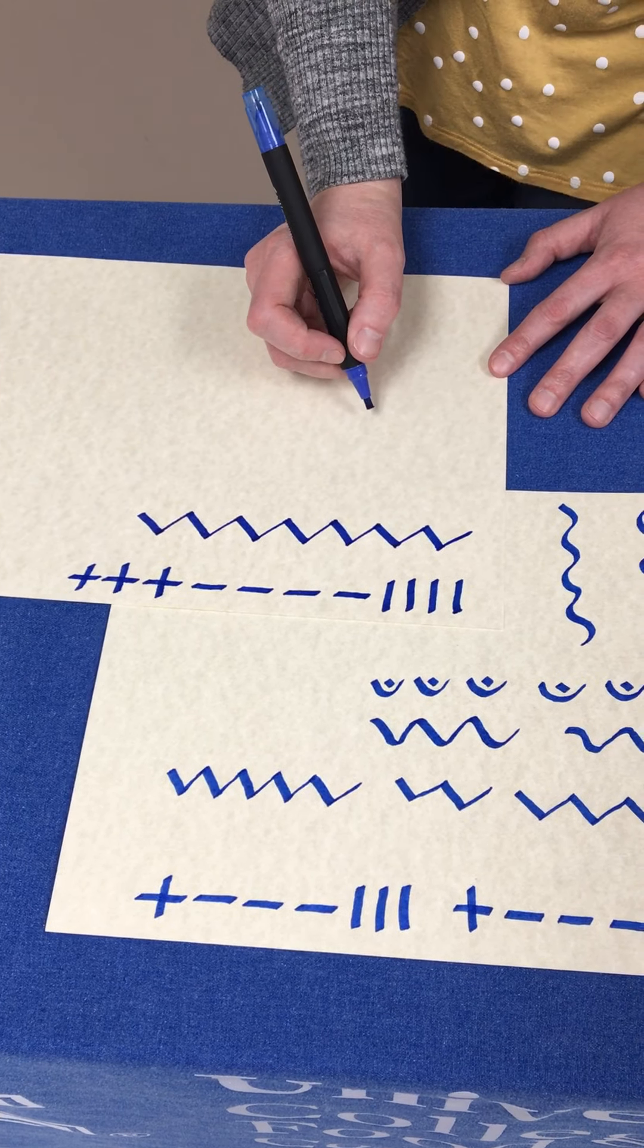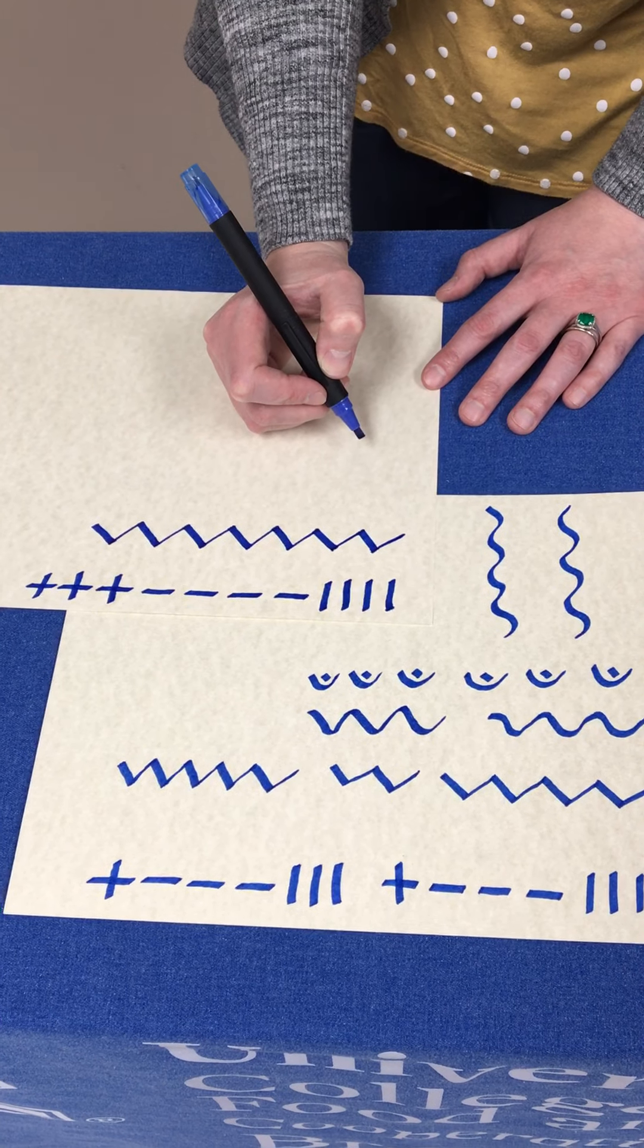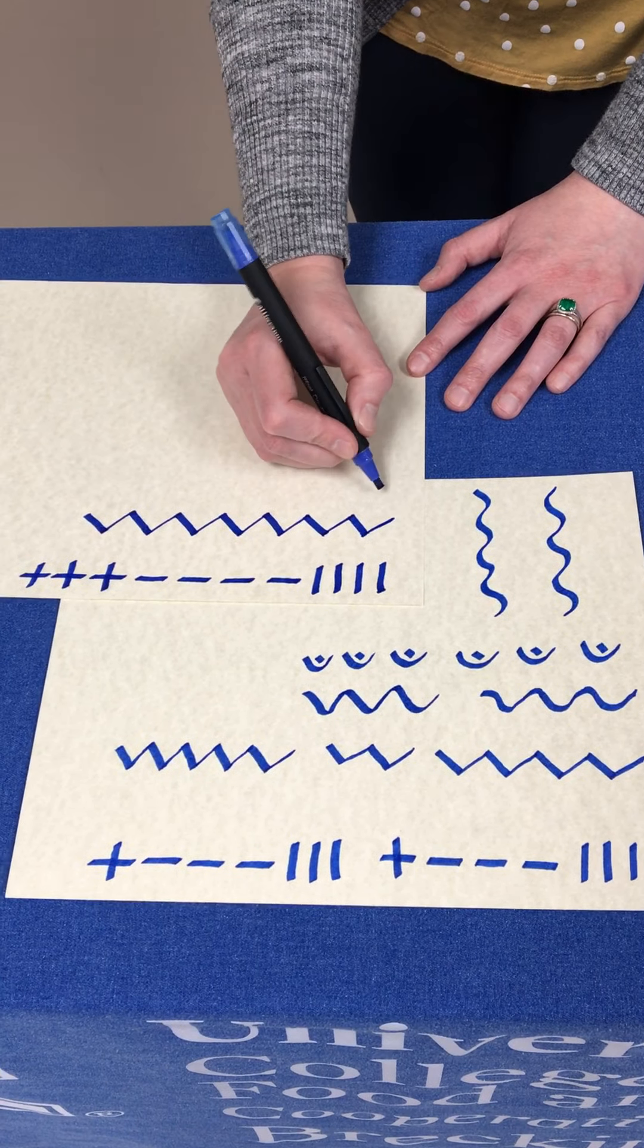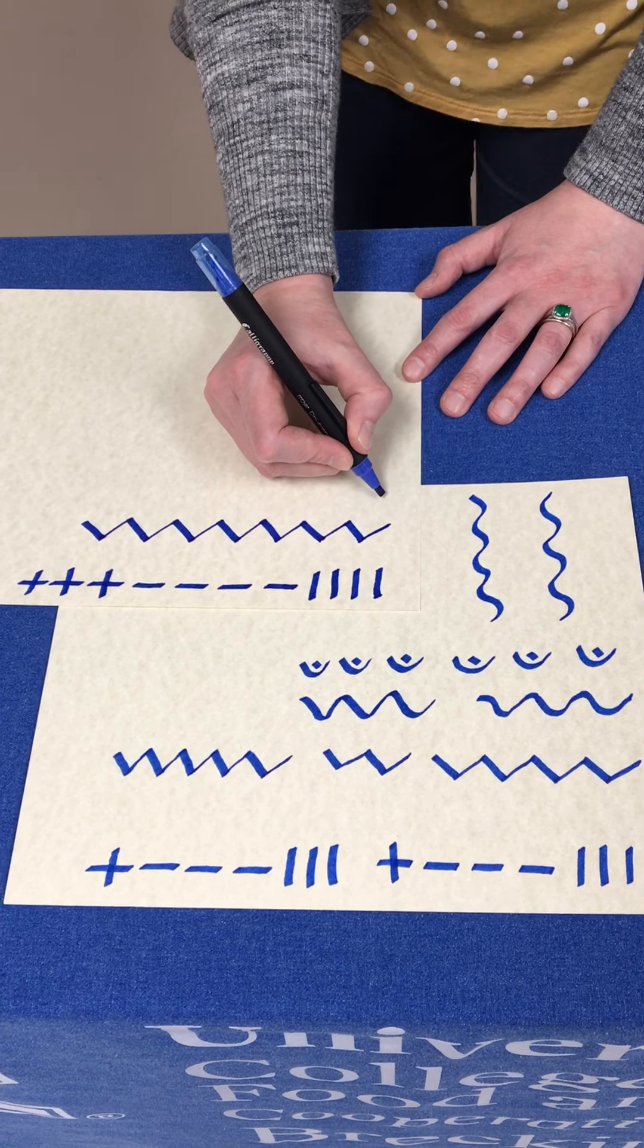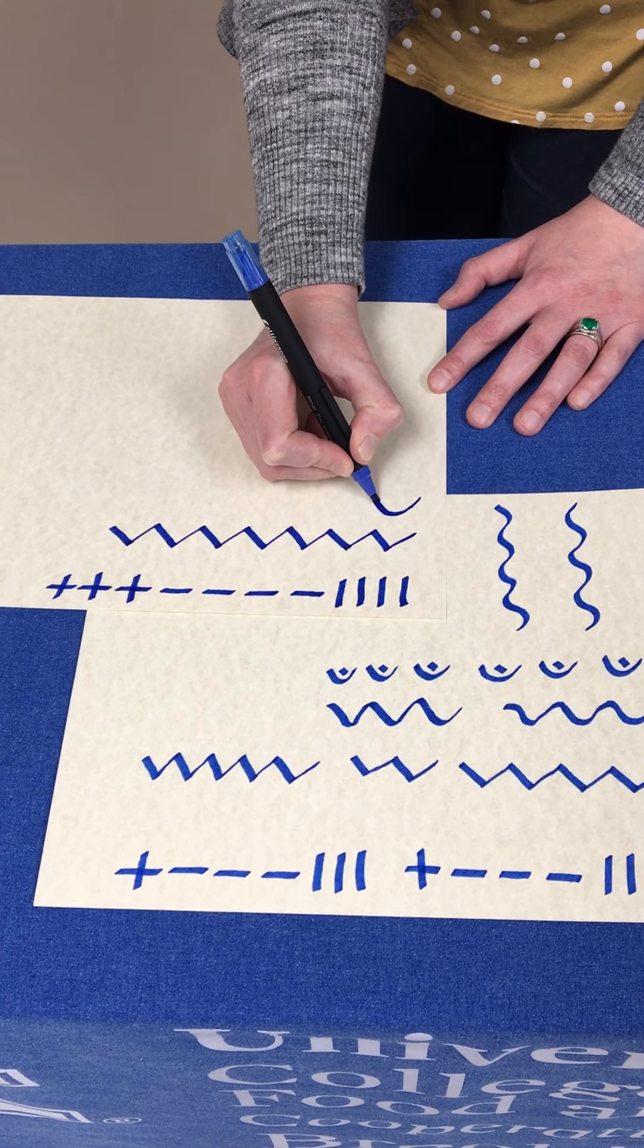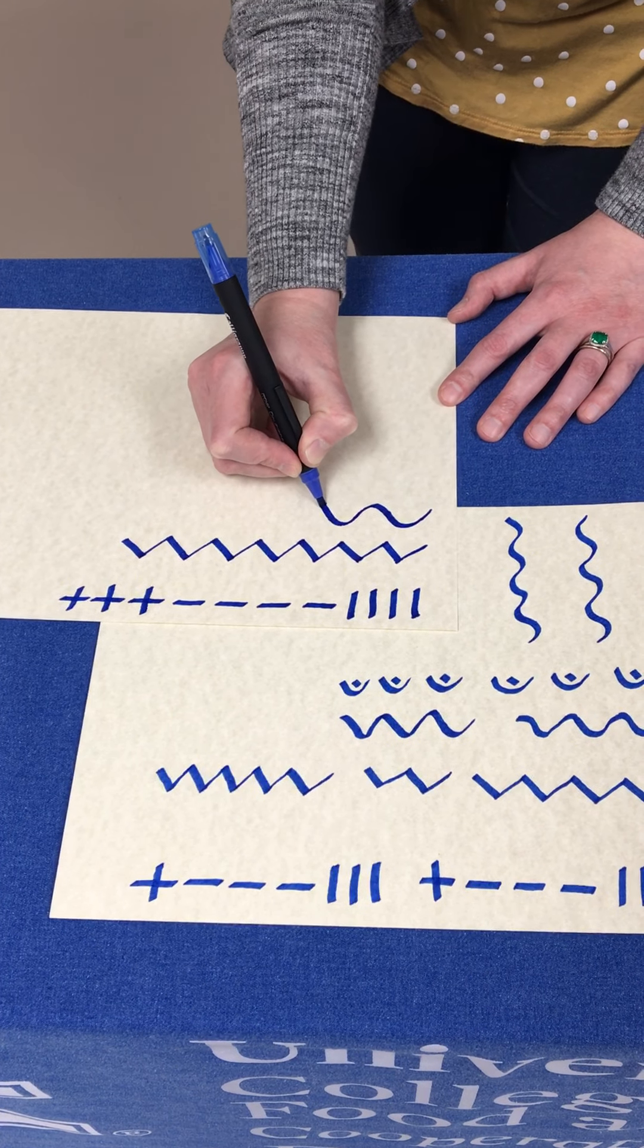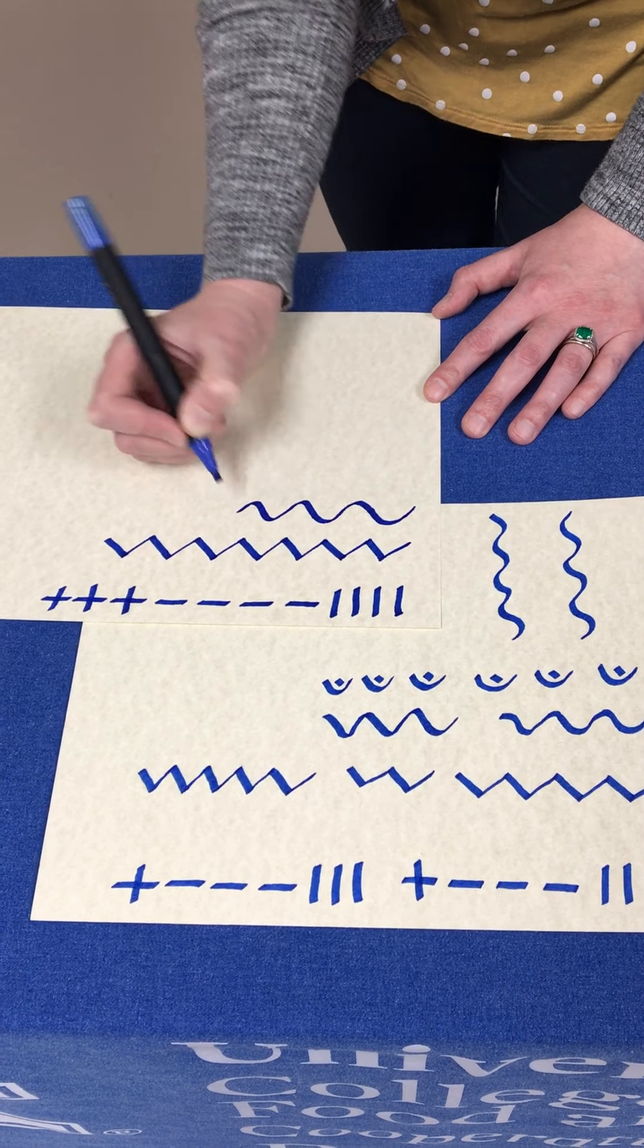Once you feel comfortable with the zigzag, not all of our letters are straight 90 degree angles or turns. We also have a lot of curves in our alphabet, so we need to practice some curves as well. In the same hand position, we still want some thin and some thick pieces of the curve. So, we're going to have our thin upstroke, curve, and it will get thicker on the downstroke, thin, thick, thin, thick, and so on.